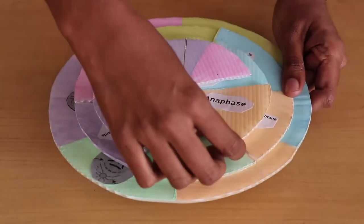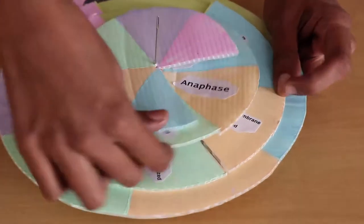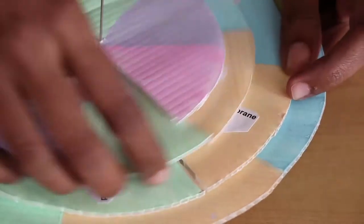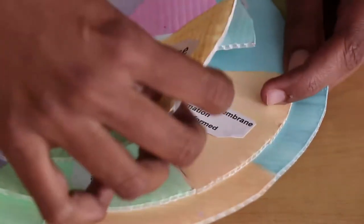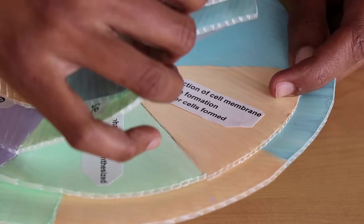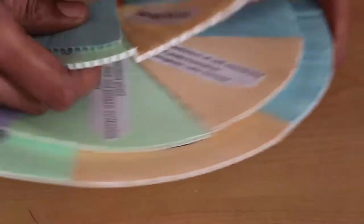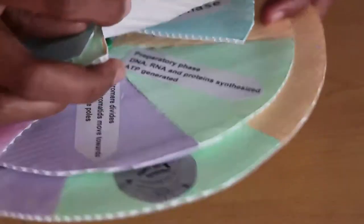So what the child does is they can rotate the disc until they come to the correct characteristic of anaphase. Now, over here, as you can see.